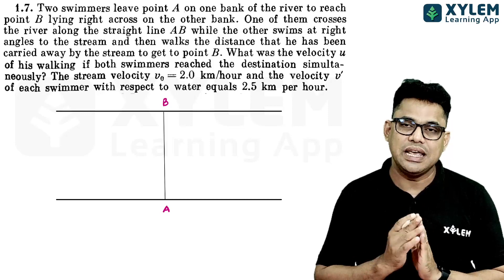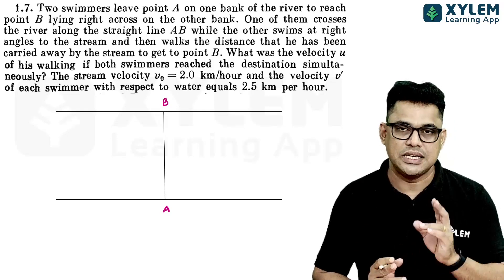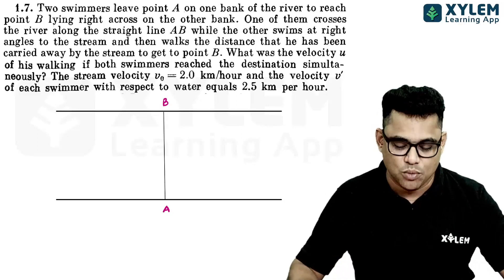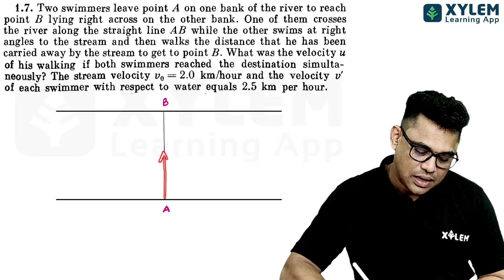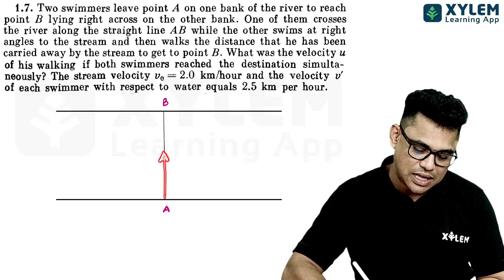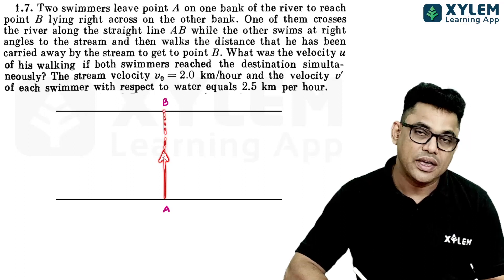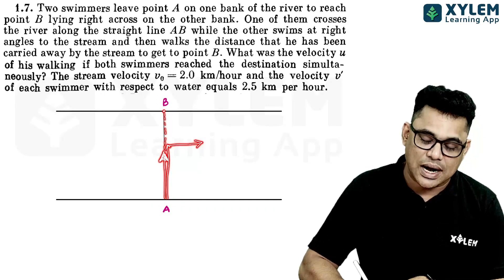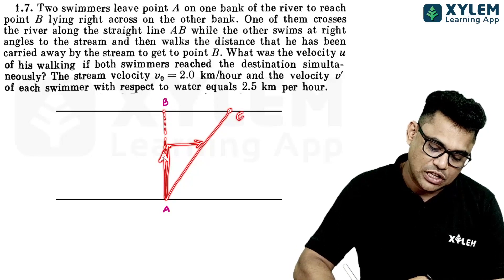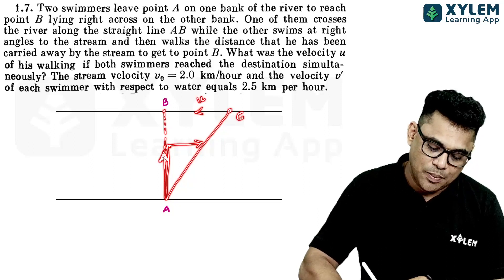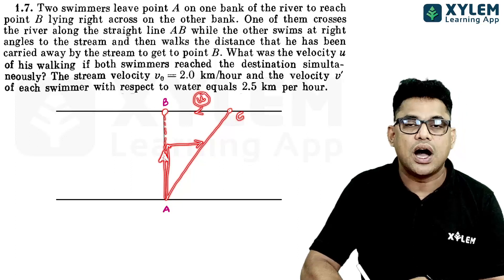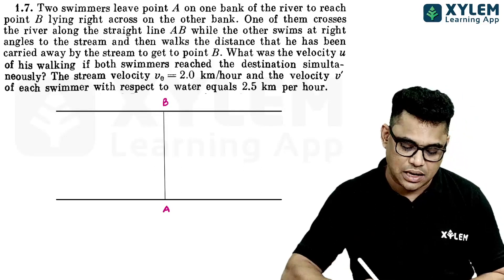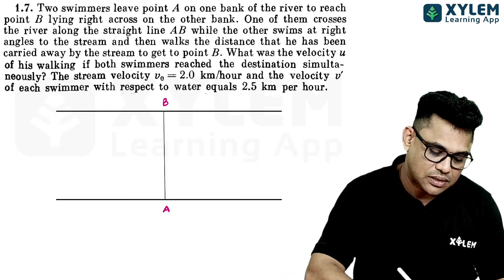Now basically what we need to do is explain the question. Two swimmers start from point A on one bank at the same time. One is going straight to point B, and the other is going to point B by a different path. What was the velocity U of his walking if both swimmers reach the destination simultaneously? First swimmer is going along which path? Straight across.